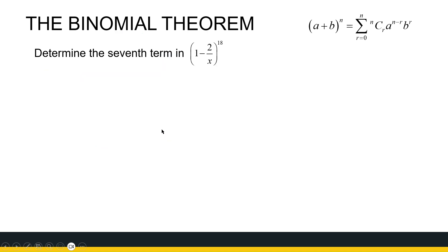Let's ask for another term — the seventh term. So now I already know term 7 means r is going to be equal to 6. But let's first look at what the general term is going to look like. So (1 − 2/x)^18 — we definitely don't want to expand that one with all 19 terms.